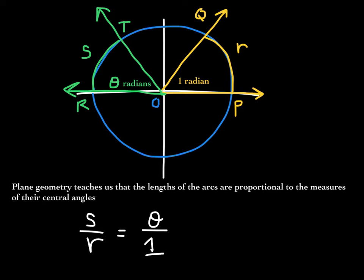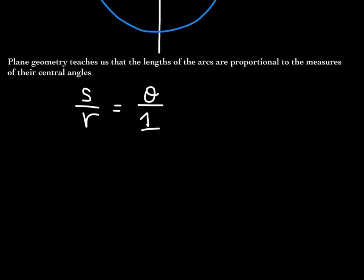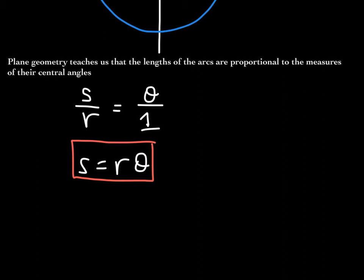That's a proportion — the lengths of the arcs are proportional to the measure of their central angles: S is to R what theta is to one. If we multiply both sides by R, we can solve for S, and we get S is equal to R times theta. This is very important: the length S of the arc intercepted on a circle of radius R by a central angle of measure theta radians is given by the product of the radius and the radian measure of the angle.